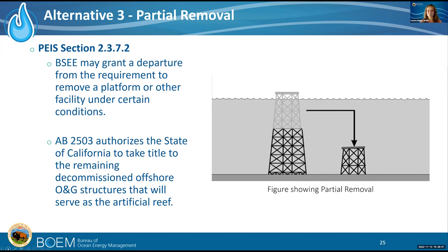Partial removal means the jacket structure is severed to a permitted navigational depth of 85 feet or greater and placed on the seafloor next to the base of the remaining structure, or towed elsewhere for deployment. The 85 feet is determined by the Coast Guard as the regulating agency of navigation, and is also required by the California rigs-to-reef bill. BSSE through its rigs-to-reef program may grant an exception from the requirement to remove the platform with certain conditions, provided the structure complies with a national artificial reef plan, the responsible state agencies acquire a permit and accept title and liability for the structure, and it satisfies the Coast Guard requirements.